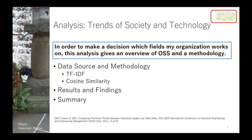From this slide, I introduce three methodologies. The first analysis is about the trend of society and technology. In order to make a decision about which field my organization works on, this analysis gives an overview of OSS and methodology. For this analysis, I explain data source, methodology, results, and findings. In the methodology, I often use TF-IDF and cosine similarity for other analyses as well.